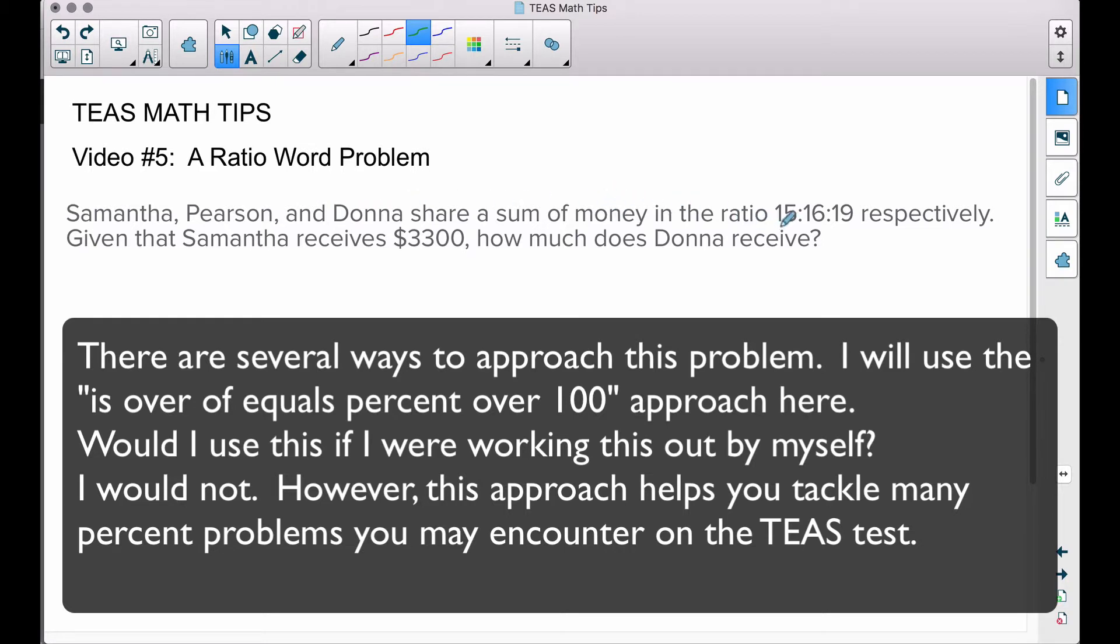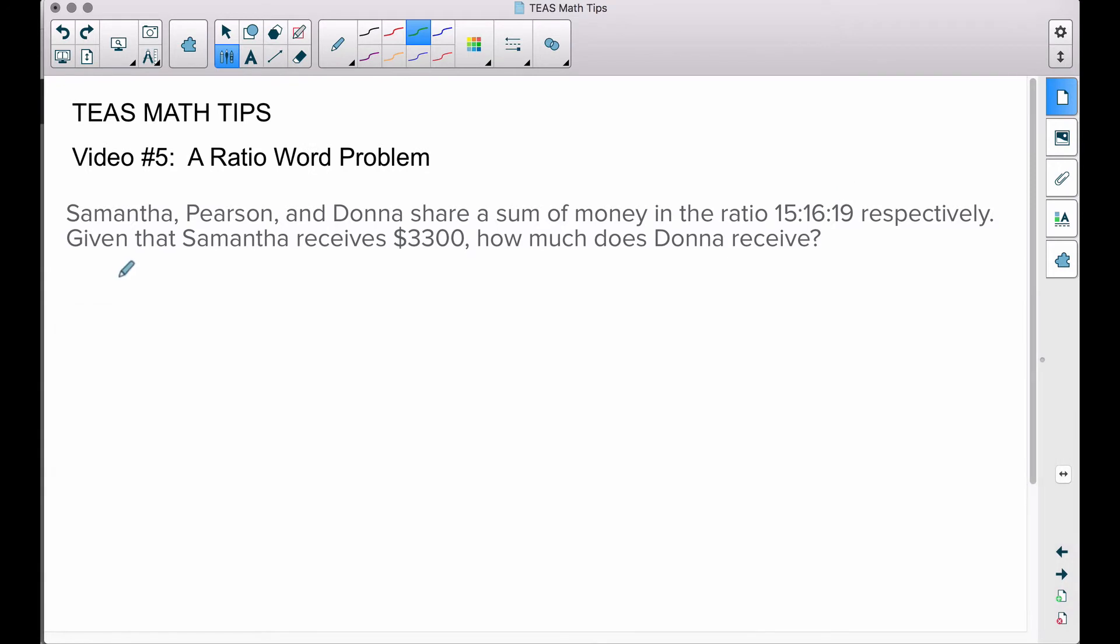Samantha, Pearson, and Donna share a sum of money in the ratio of 15 to 16 to 19 respectively. Samantha gets 15 parts, Pearson gets 16 parts, and Donna gets 19 parts of this sum of money. Given that Samantha receives $3,300, how much does Donna receive?